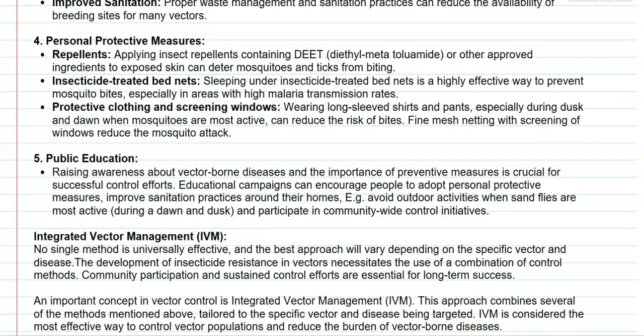The next category is public education — raising awareness to people about vector-borne diseases, their illnesses, and what preventive measures can be used for successful vector control. Educational campaigns can encourage people to adopt personal protective measures and improve sanitation practices around their homes. For example, people can avoid outdoor activities in areas highly infested with sand flies, since sand flies are more active during dawn and dusk. People can also participate in community-wide control initiatives that reduce the vector population.